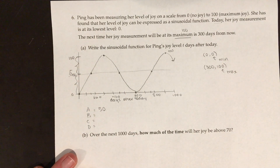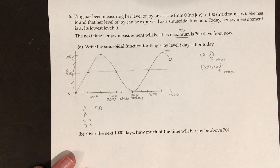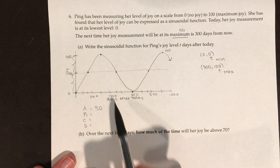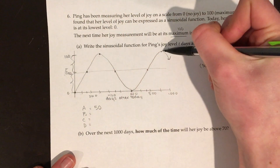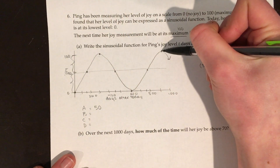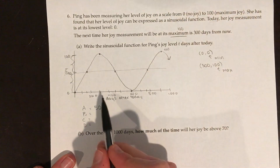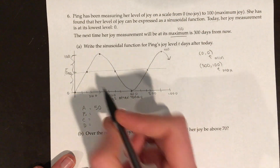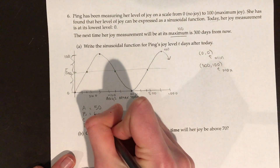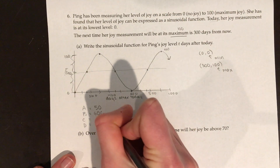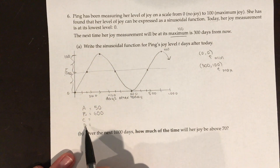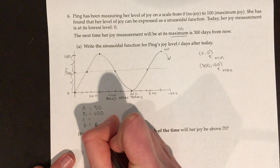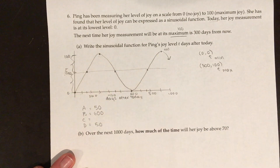B is the period — that's how long it takes to make one full cycle. I'm going to go from my max to my max: from 300 to 900. So the period in this case is 600. Then I'm going to do the D value. D is the mean, or the middle, which is 50 in this case.